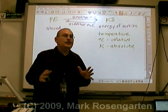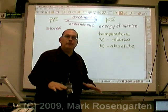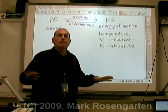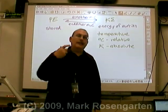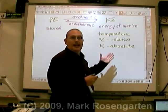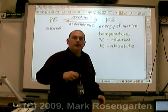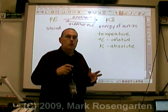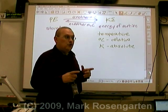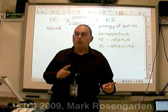Kelvin is just the Celsius scale shifted down to the point where all motion stops. The hotter it is, the faster the molecules move; as it gets cooler, the molecules slow down until they stop.